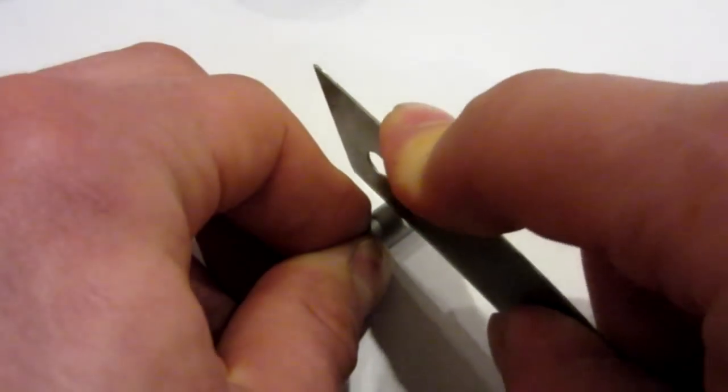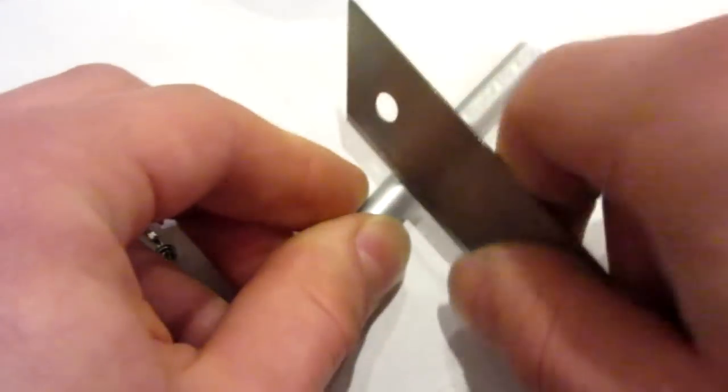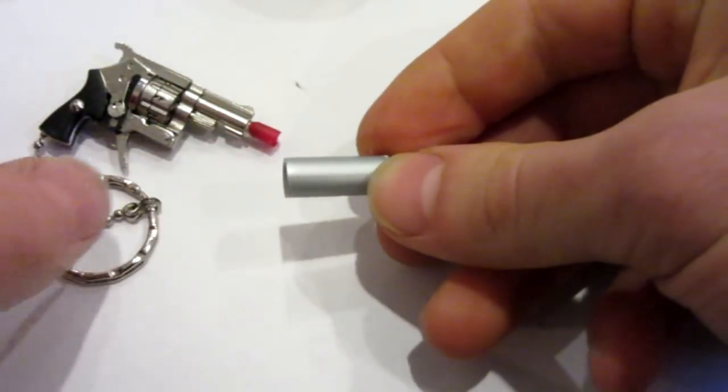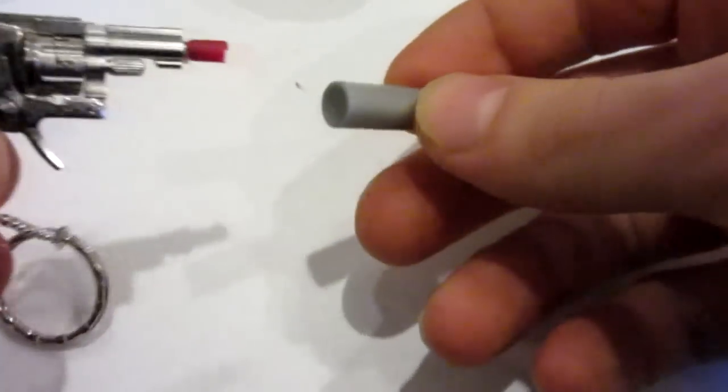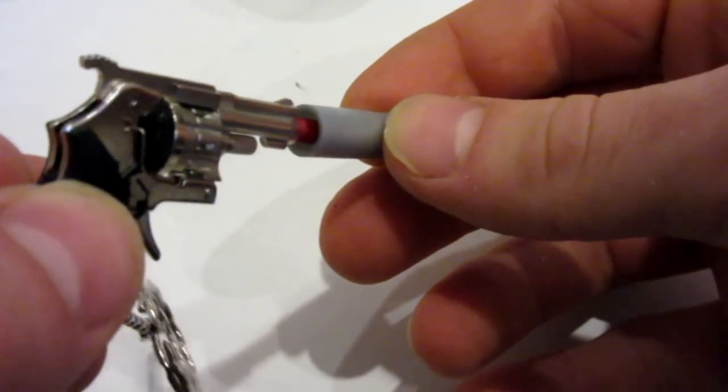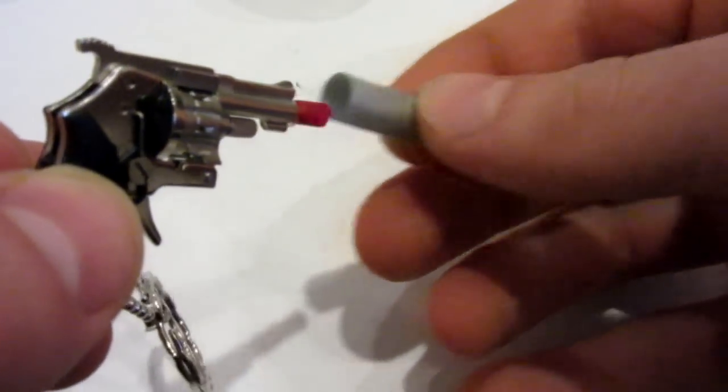So I'm just going to take my X-Acto blade here and cut my pen tube to about an inch long, just like that. And then what we're going to do is use some hot glue and potentially some electrical tape to seal it just around the red piece like that.